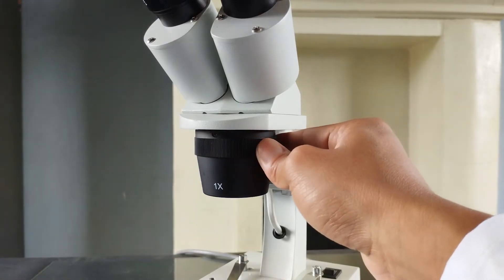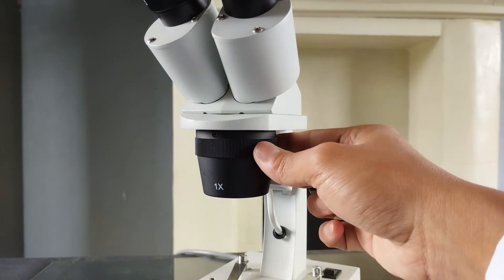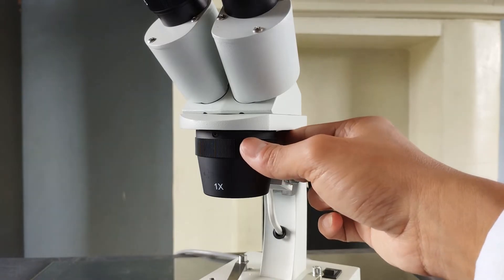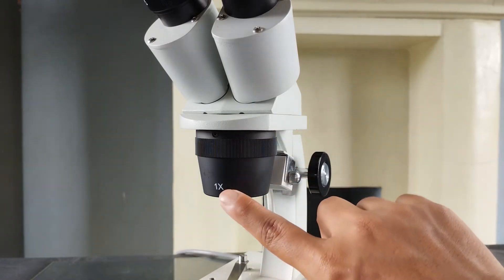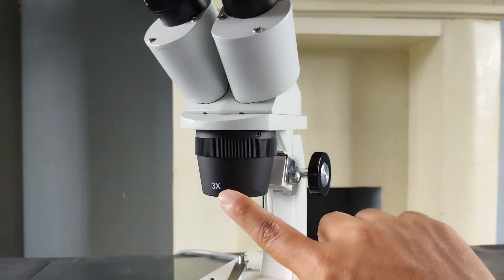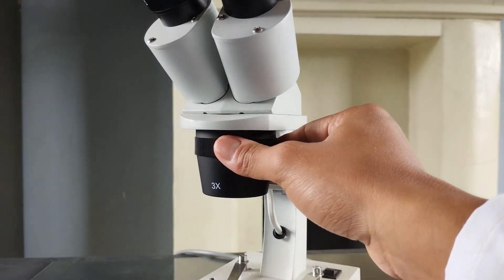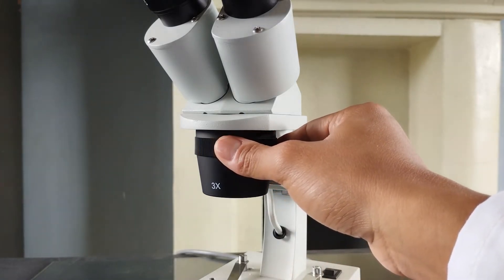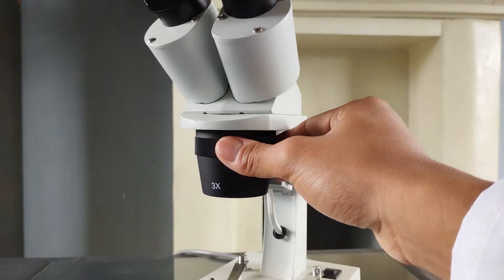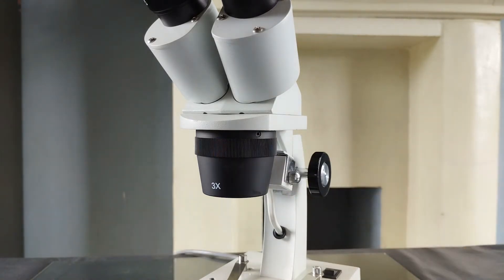In this particular model that I am using for this video, the built-in objective magnifications are 1x and 3x. So, if the eyepiece lens is a 10x and I use a 2x objective, then my specimen would be magnified 20 times and so on. In this way, a typical stereo microscope, depending on the model and the optics combination, one can magnify objects within a range of about 10 times all the way up to about 120 times or even 150 times.